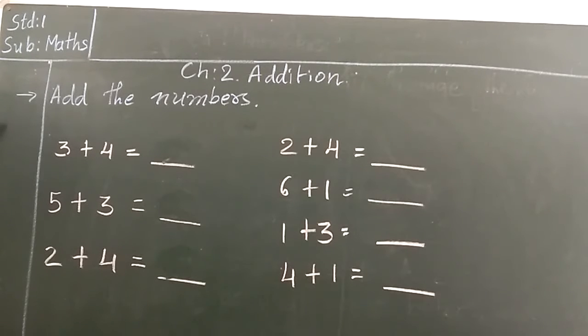Now we will look at the numbers. See here, which number is given here? 3. Here 4. So we have to count these both numbers together. So first we will break 3 fingers on one hand and 4 fingers on other hand. And we have to count it all together.